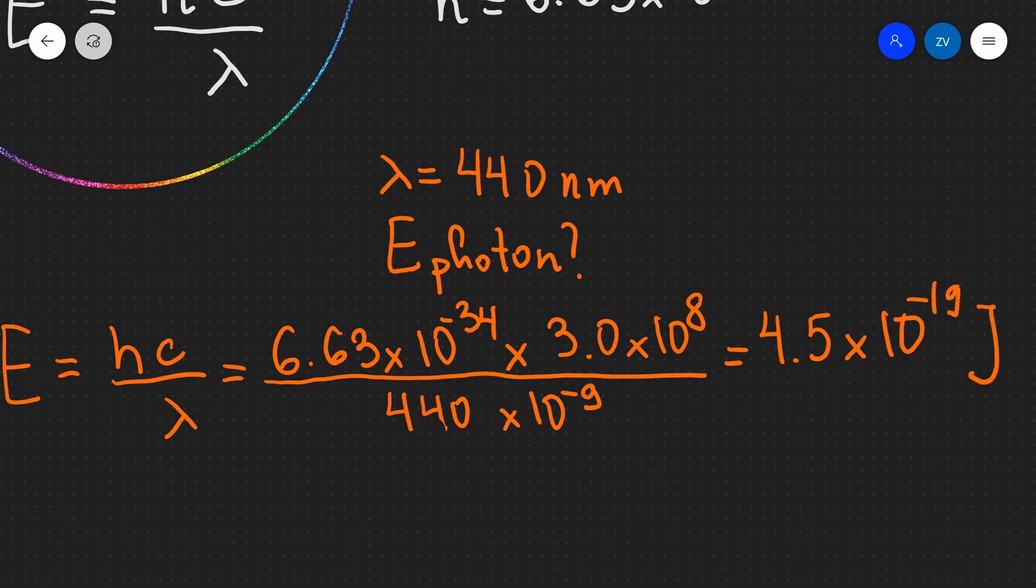So an individual photon emerging from a laser with a wavelength of 440 nanometers is going to have this much energy, 4.5 times 10 to the power of minus 19 joules.